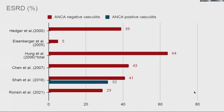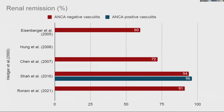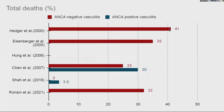As far as outcomes, up to 40% reached ESRD. The incidence of ESRD in seropositive ANCA vasculitis is about 25 to 28%, so slightly higher in ANCA-negative. Relapse rates were up to 20%. Most patients did reach renal remission — up to 91 to 94% in later cohorts. There were up to 40% total deaths in some cohorts, most commonly from infection, cardiovascular disease, and relapse of vasculitis.